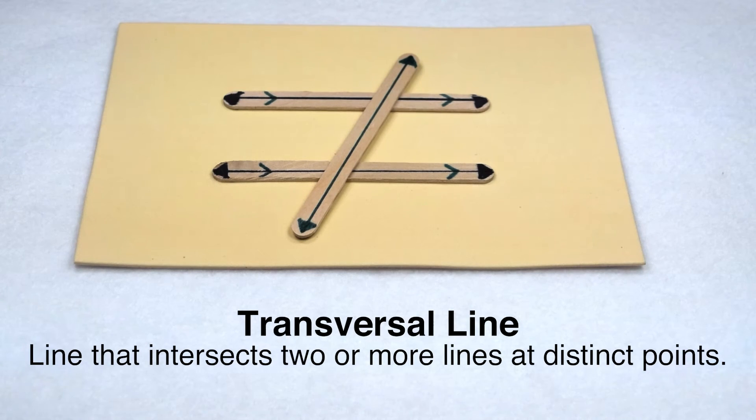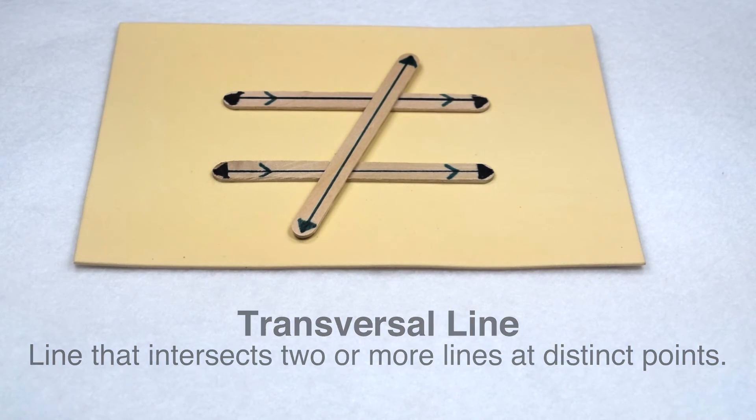But a transversal can also cut across intersecting lines. As long as you can see the distinct points where it cuts across the lines, it would still be a transversal.